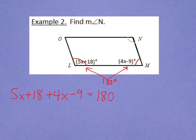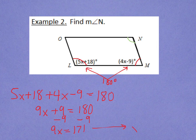Combining like terms, I would say that 9x plus 9 equals 180. Subtract 9 from both sides, and I would have 9x equals 171. If I divide both sides by 9, that would lead me to conclude that x is equal to 19.